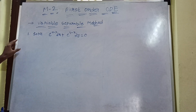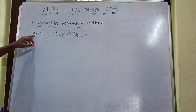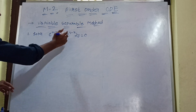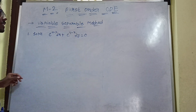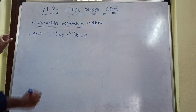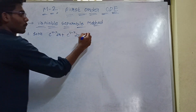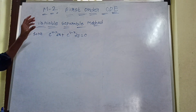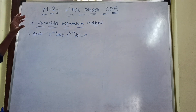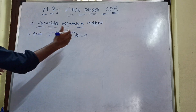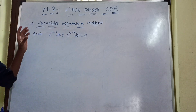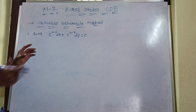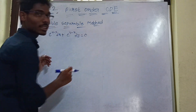Okay friends. The question is: solve e^(x−y) dx + e^(y−x) dy = 0. We can solve this equation. First we check that it is the variable separable method.